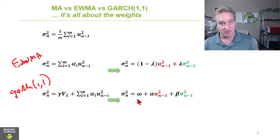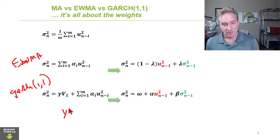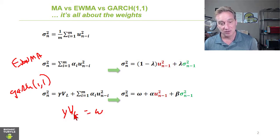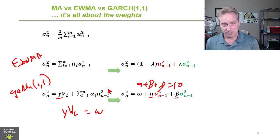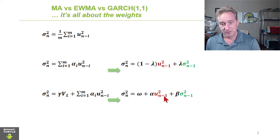I talked about this in a previous video. We can see the omega is equal to the product of gamma and the long-run variance. So our weights here really are alpha plus beta plus gamma together equal 1.0 or 100%.